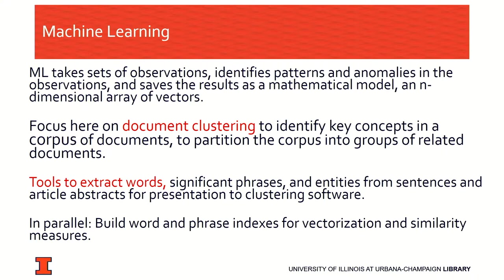Machine learning takes sets of observations and identifies patterns and anomalies. Pattern recognition is really the heart of any machine learning algorithm. Machine learning uses a mathematical model — in fact, all machine learning is numbers. So documents, for example, have to be vectorized.